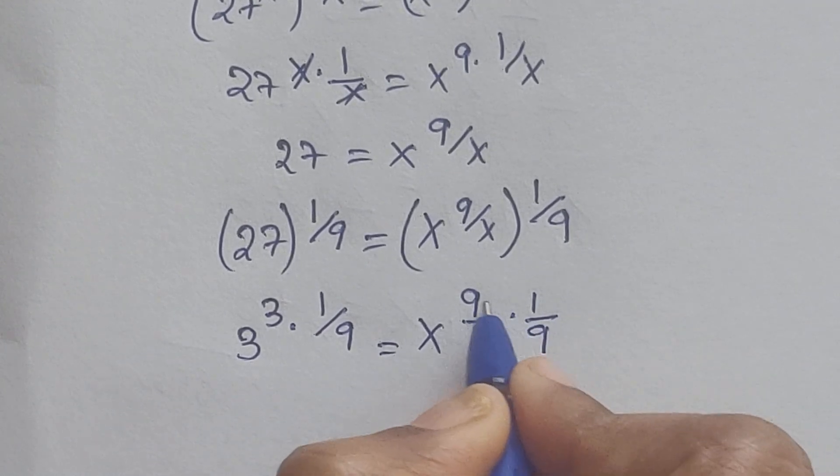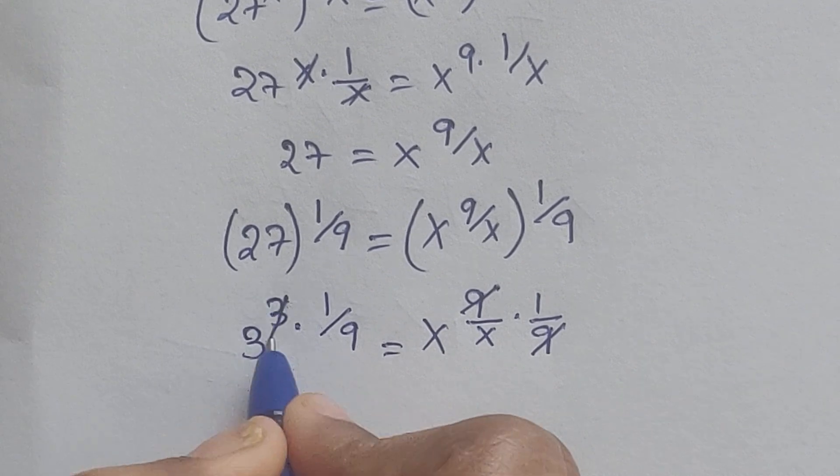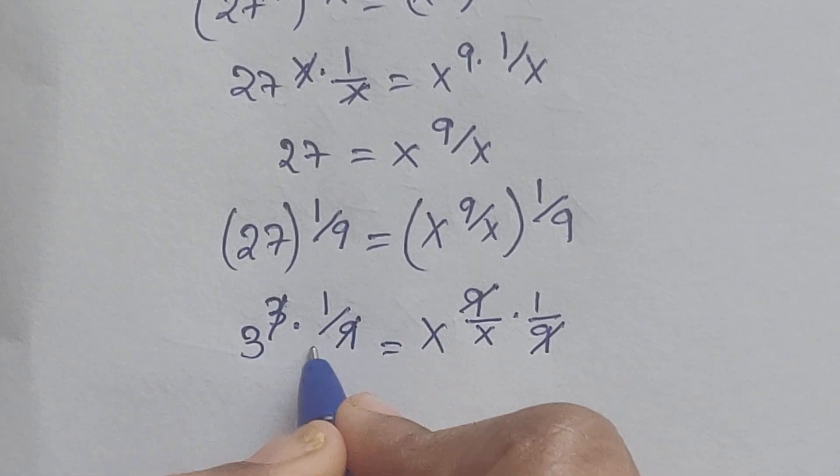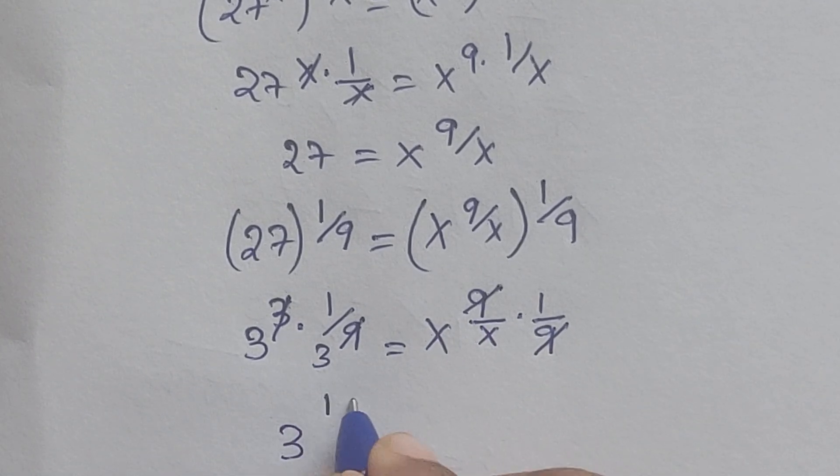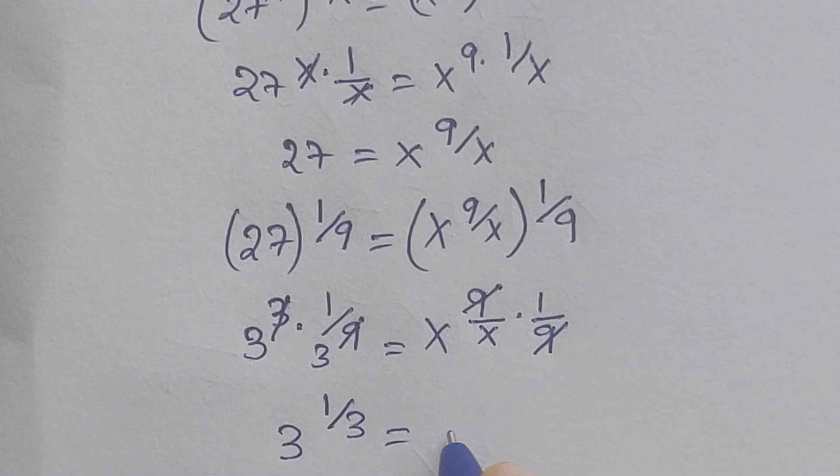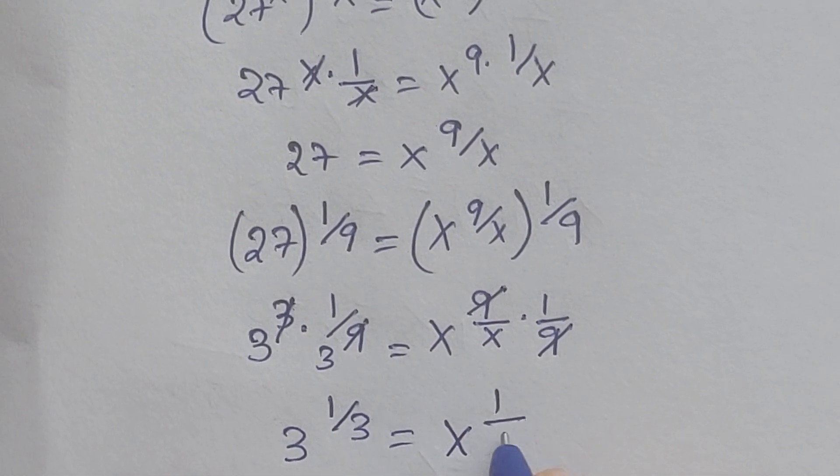So here 9 9 get cancelled. 9, 3 times 3 is equal to 9. So 3 to the power of 1 by 3 equals x to the power of 1 by x.